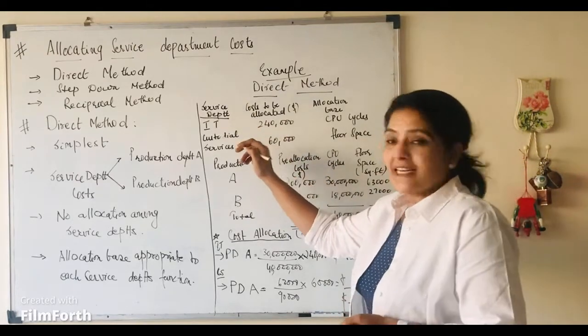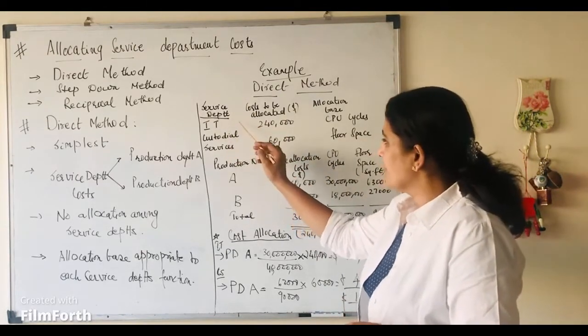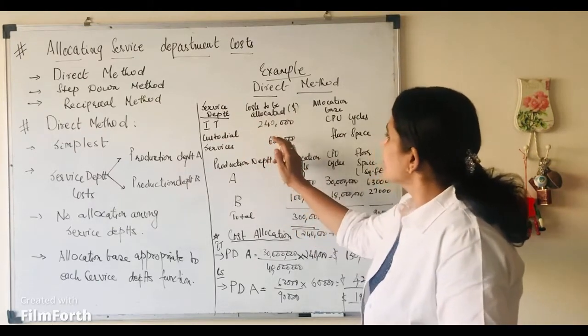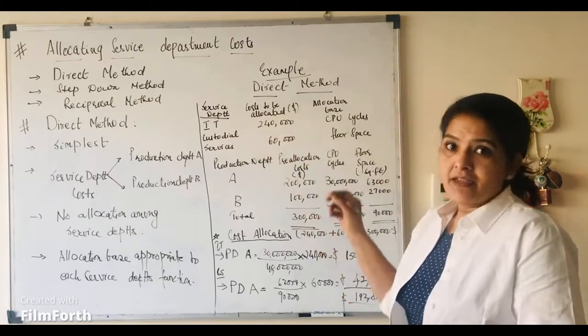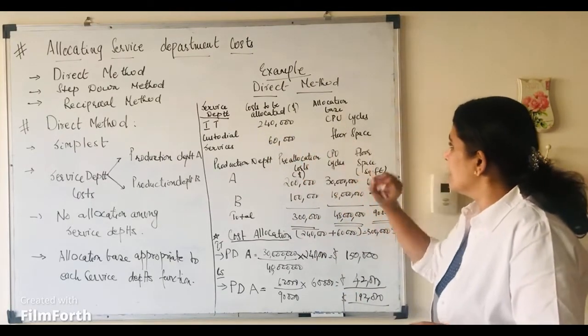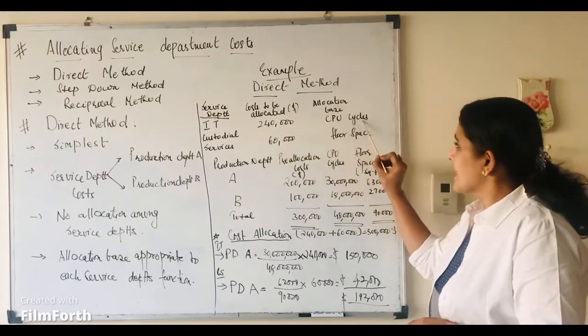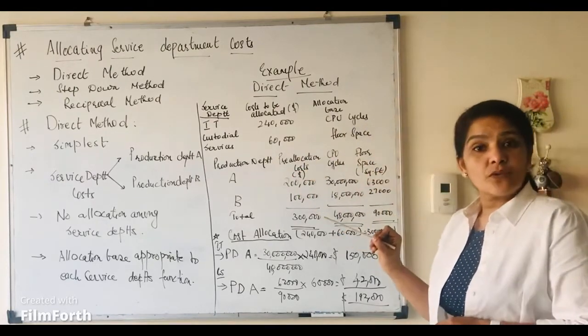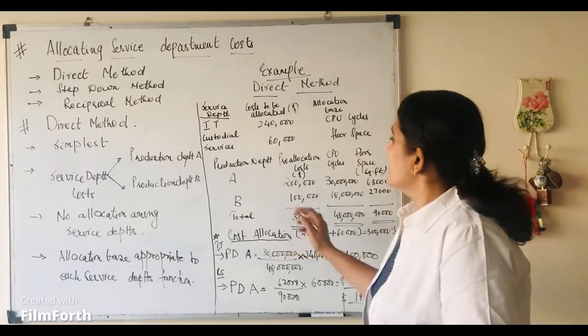Service department, let us take it as IT or information technology and custodial services. Here under this, we have the costs to be allocated of each department. Then this is the allocation base which is CPU cycles in case of IT and custodial services, floor space in square feet.